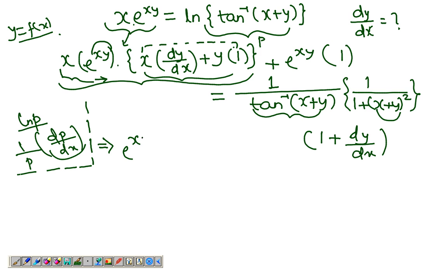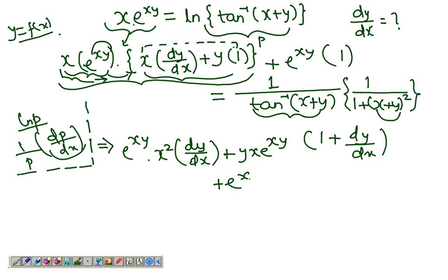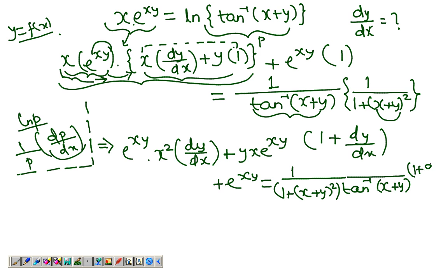Simplifying, we get e^(xy) times x² · dy/dx — from multiplying x·e^(xy) inside the brackets — plus y·x·e^(xy) plus e^(xy), equal to 1 over [(1 + (x + y)²) · tan⁻¹(x + y)] times (1 + dy/dx). Now let's put all the terms with dy/dx on one side.